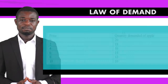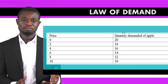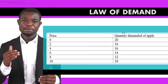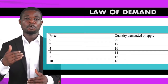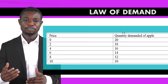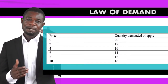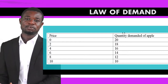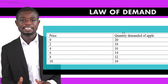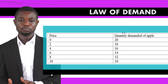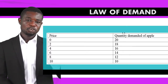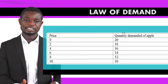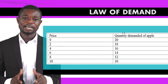You can see this in the demand schedule on your screen. The price starts from zero and increases to two, four, and so on. As price increases, the quantity demanded falls from 20, to 18, to 16, to 14, to 12, to 10. This demonstrates the inverse relationship between price and quantity demanded — exactly what the law of demand describes.